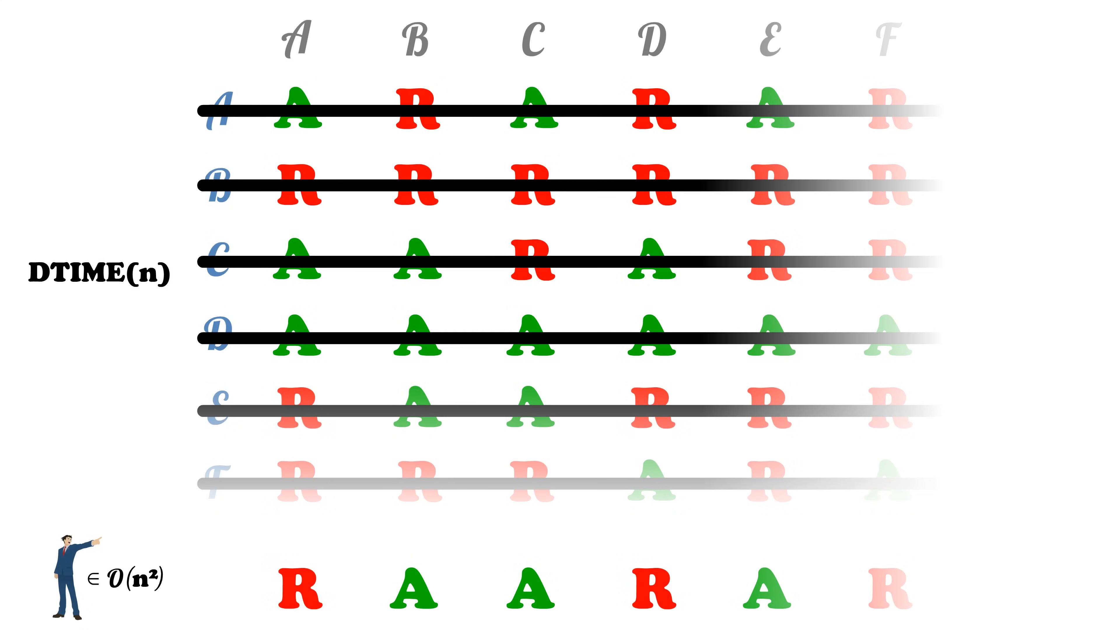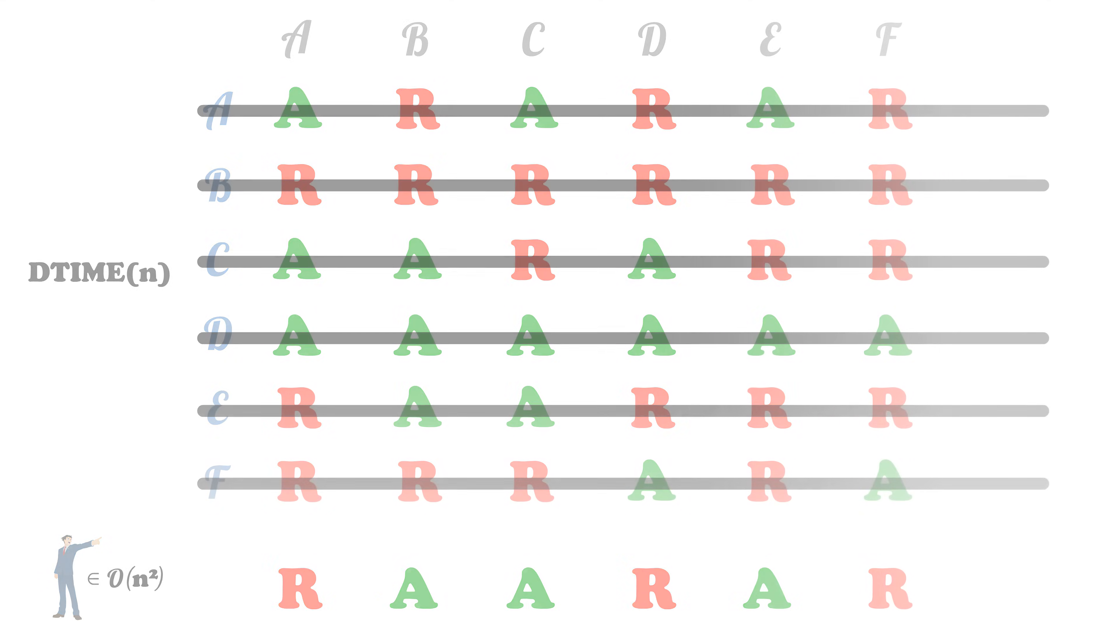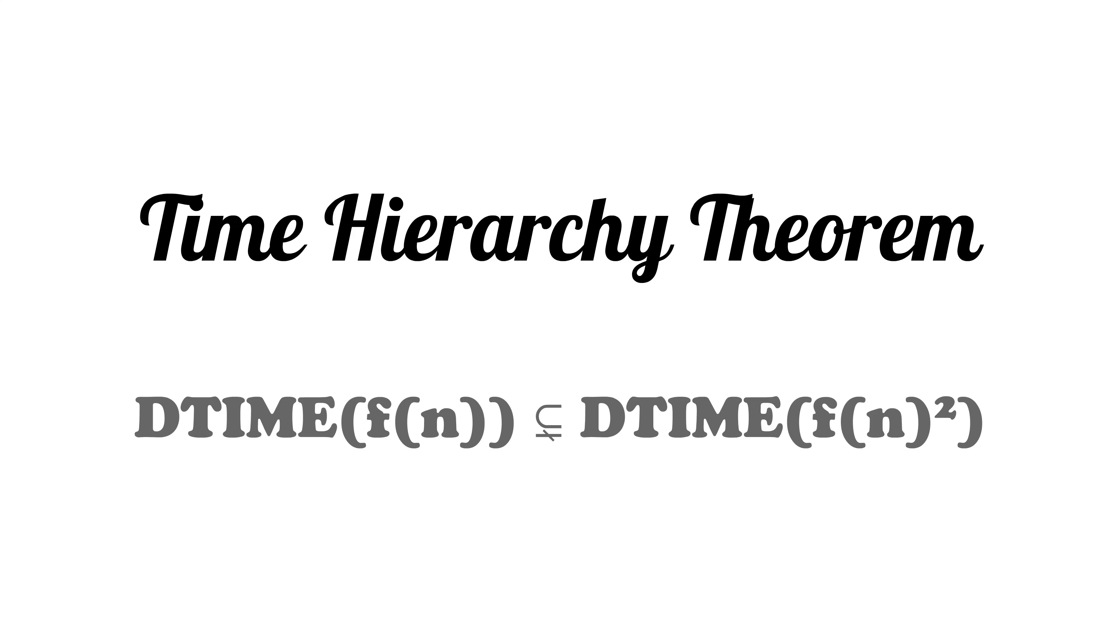We can then replace P and exp time with these other classes and essentially use the same argument. We have a much more generalized theorem known as the time hierarchy theorem which says that d time of f of n is a strict subset of d time of f of n squared.